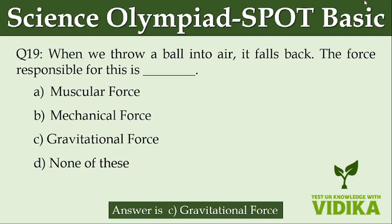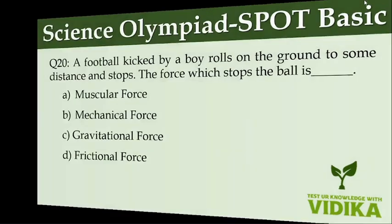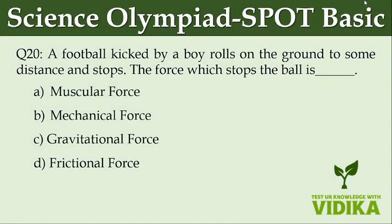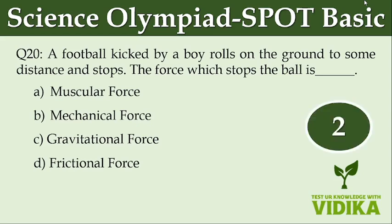A football kicked by a boy rolls on the ground some distance and stops. The force which stops the ball is dash. Option A, muscular force. Option B, mechanical force. Option C, gravitational force. Option D, frictional force.